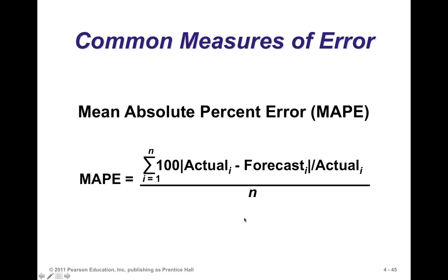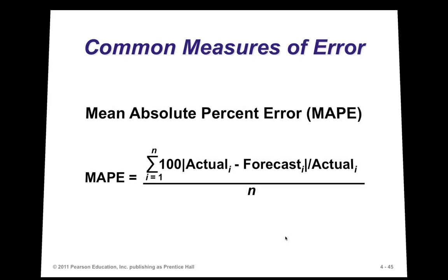So if your MAPE is 5%, that means on average you're 5% off. If it's 10%, on average you're 10% off. To me that's extremely tangible — I like that.